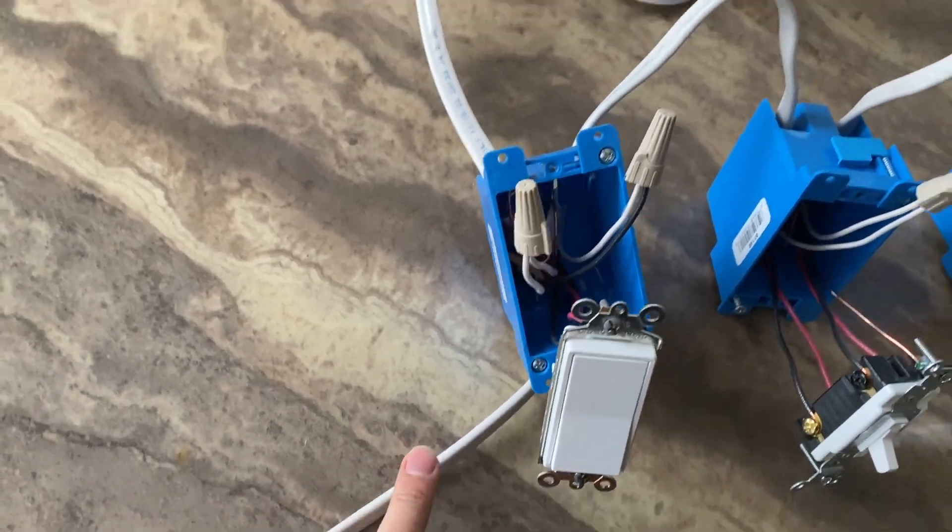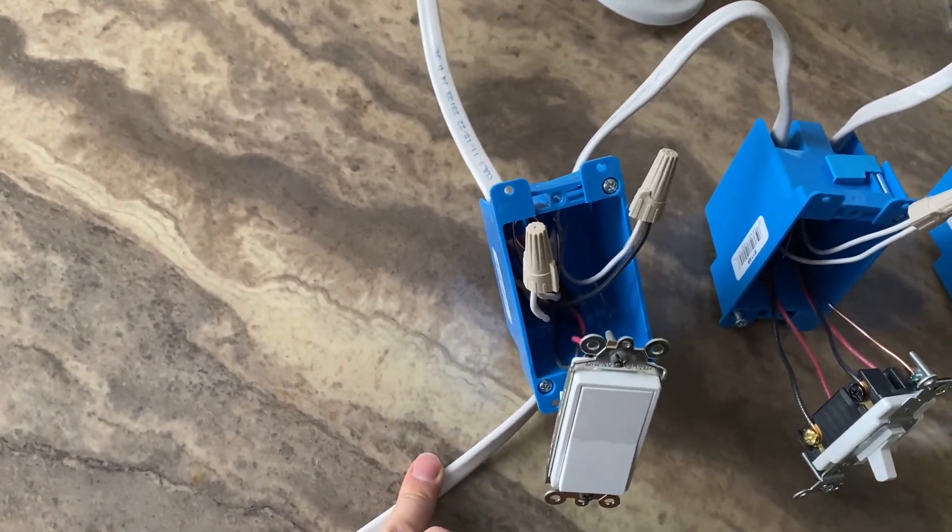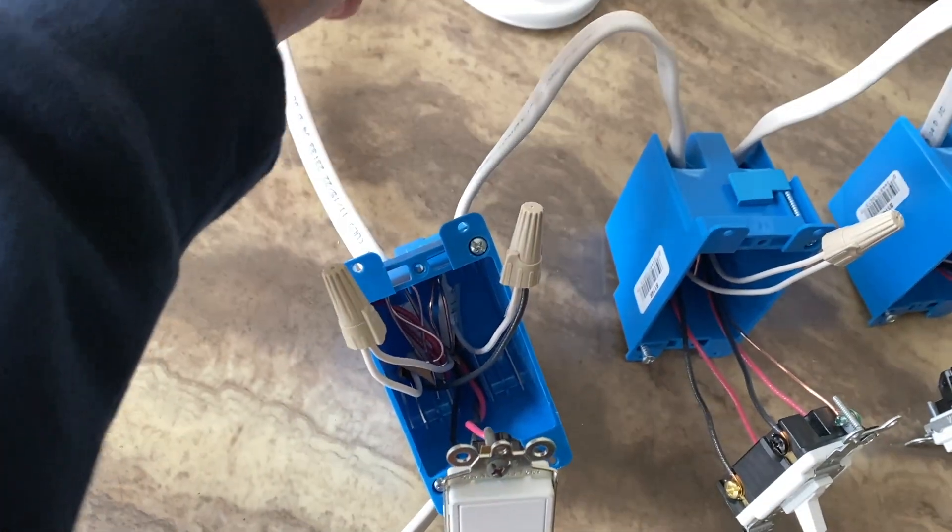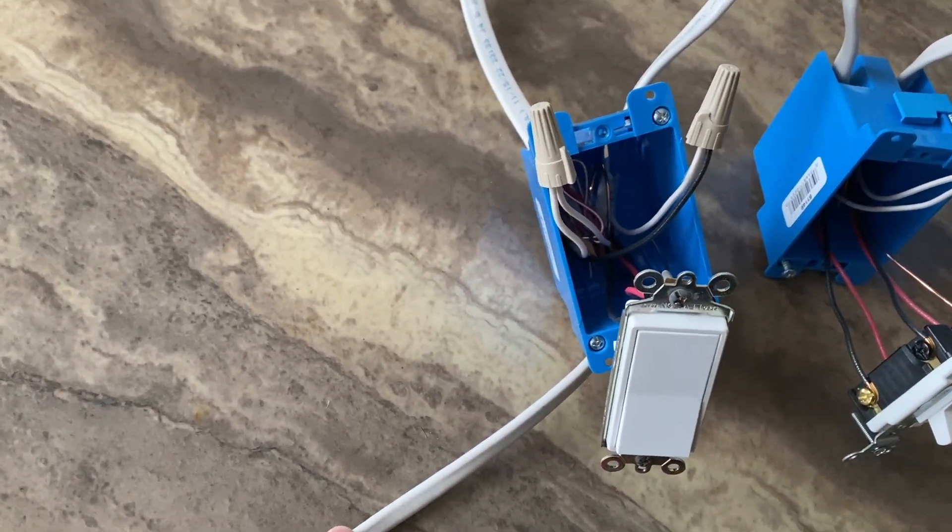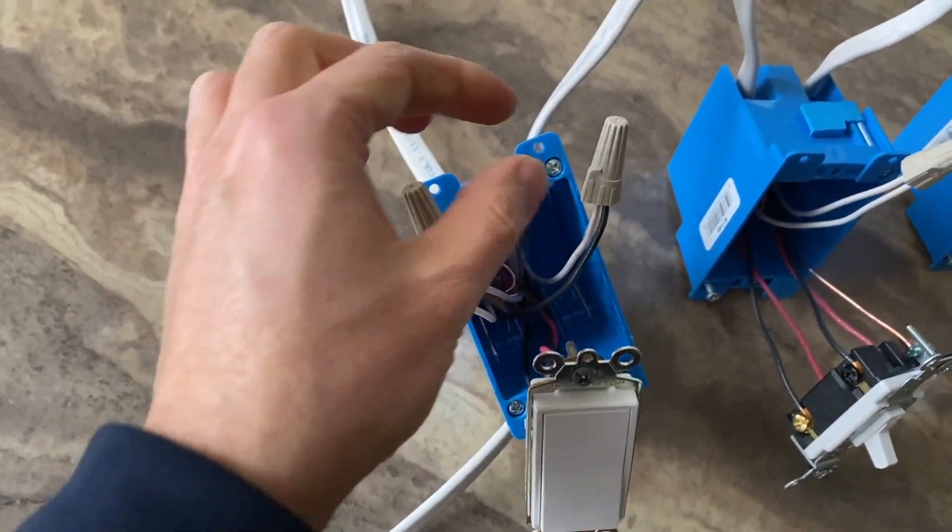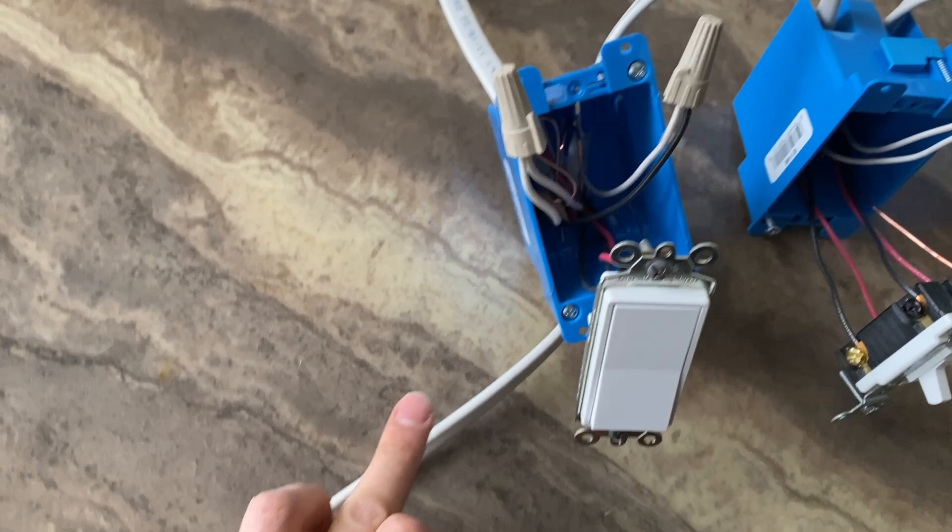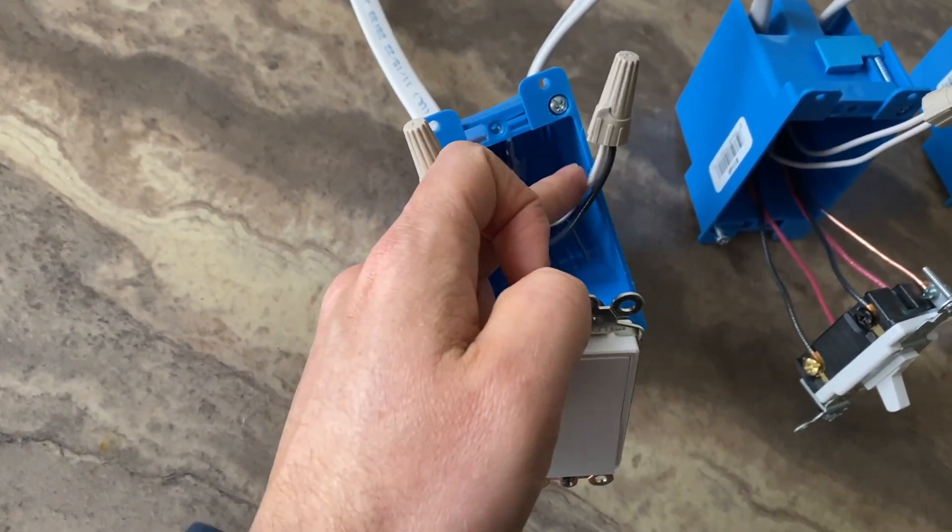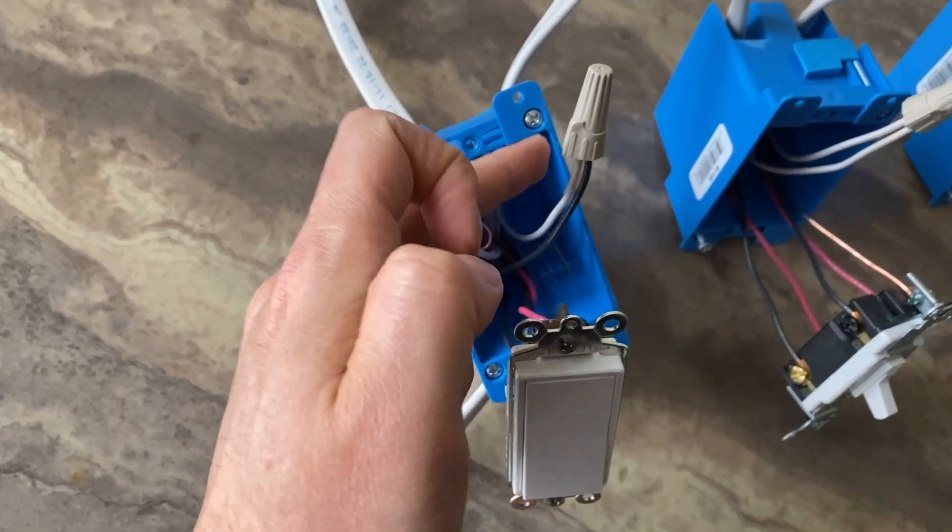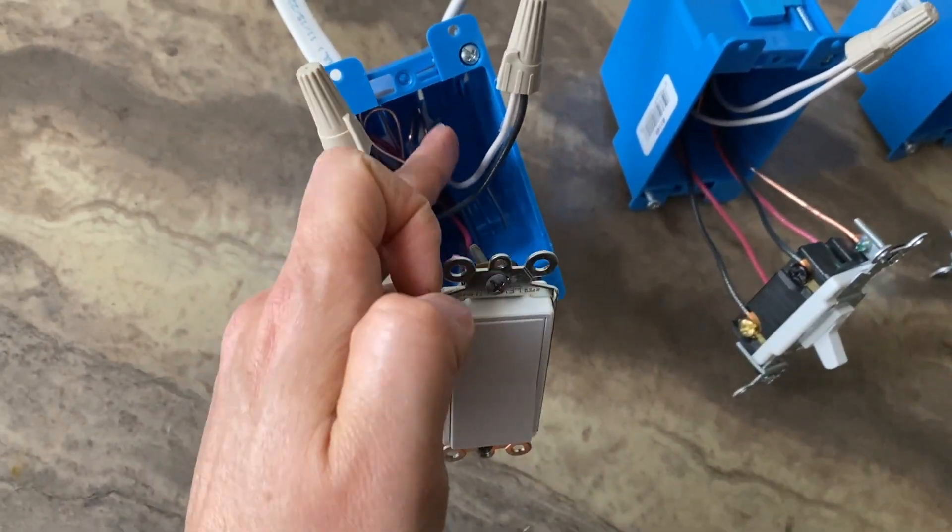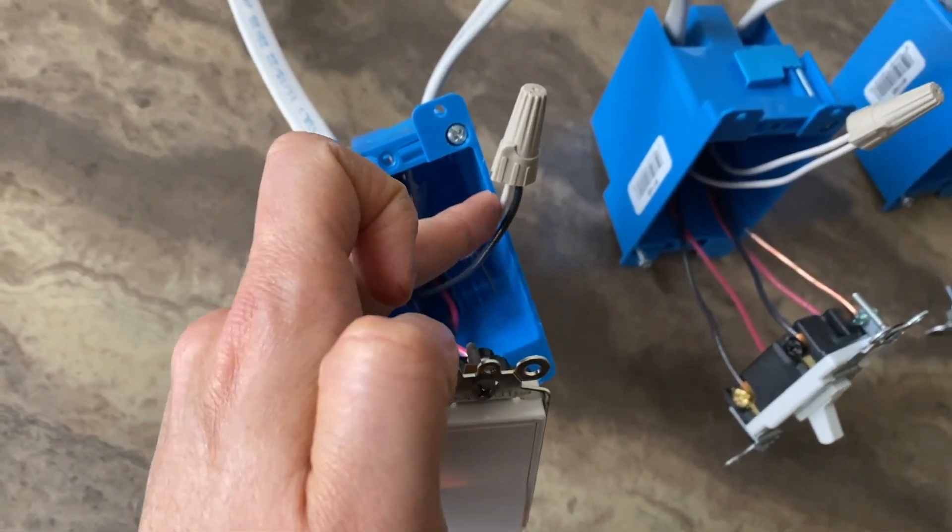From this line, from the power source, we have neutrals of the light and the power source connected together. And then the hot wire from this 14-2 is connected to the neutral wire. Basically it has to be taped - I didn't tape it just so you guys know what's going on here - so black to white.